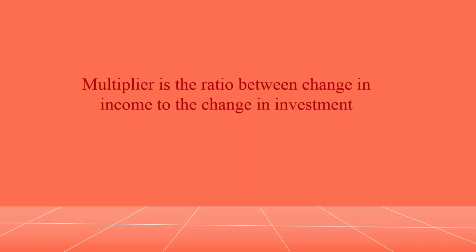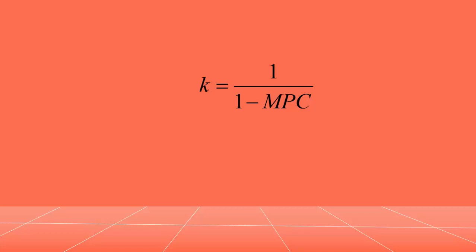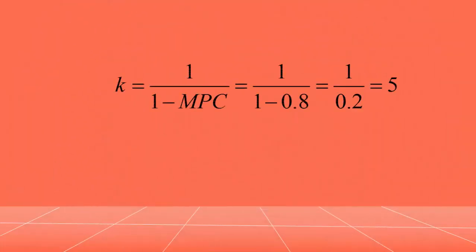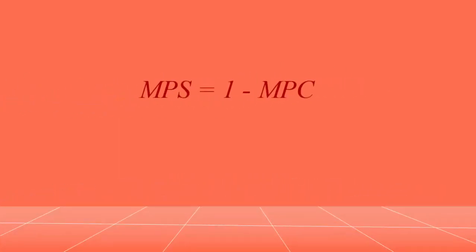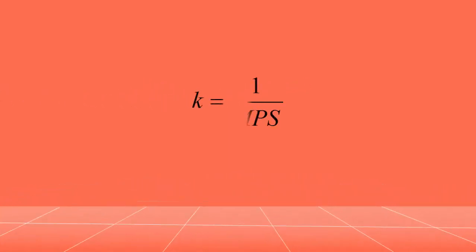There is another way to calculate the multiplier. It can be calculated from marginal propensity to consume. The formula is K is equal to 1 divided by 1 minus MPC. By substituting the value for marginal propensity to consume, that is 0.8, we get the same result. Since marginal propensity to save is equal to 1 minus marginal propensity to consume, the formula for finding the multiplier value can also be stated in terms of MPS, and substituting 0.8 we get the same result.